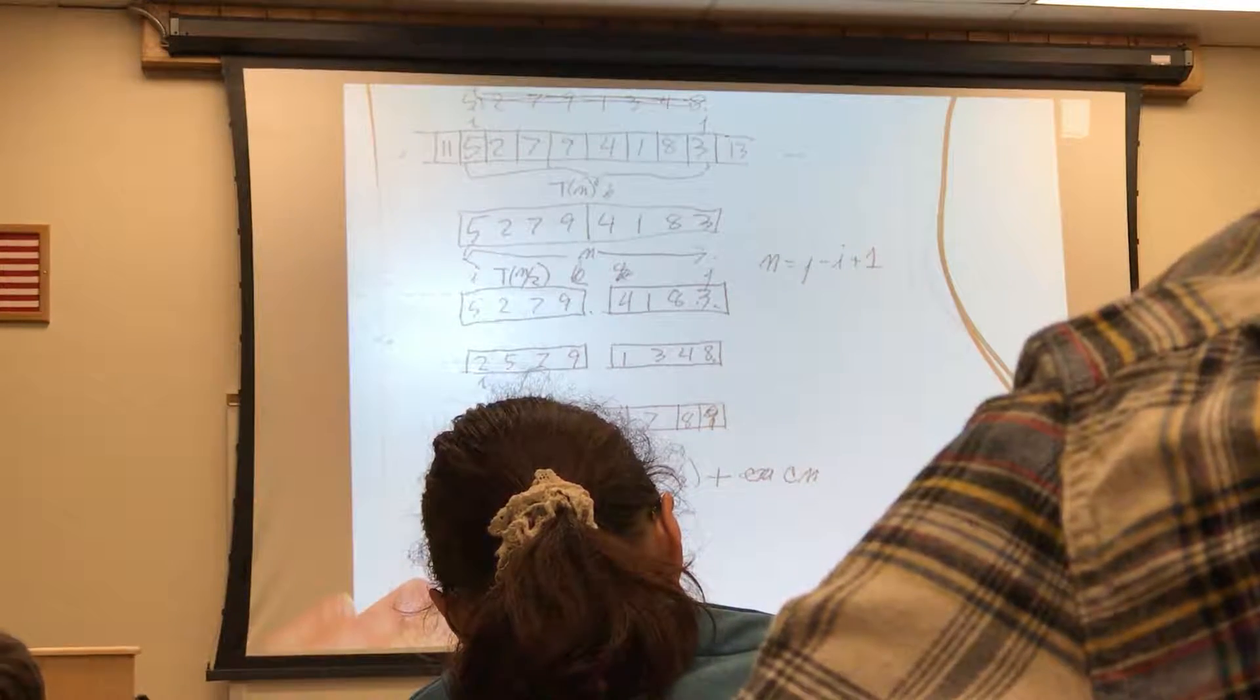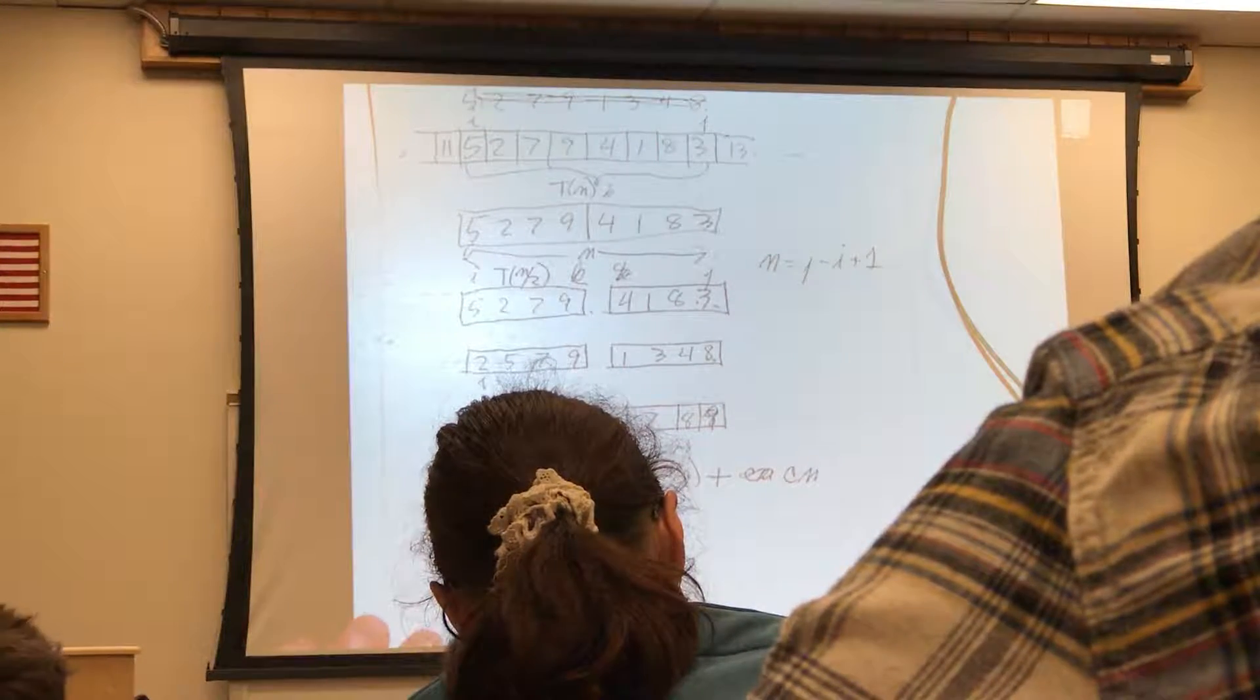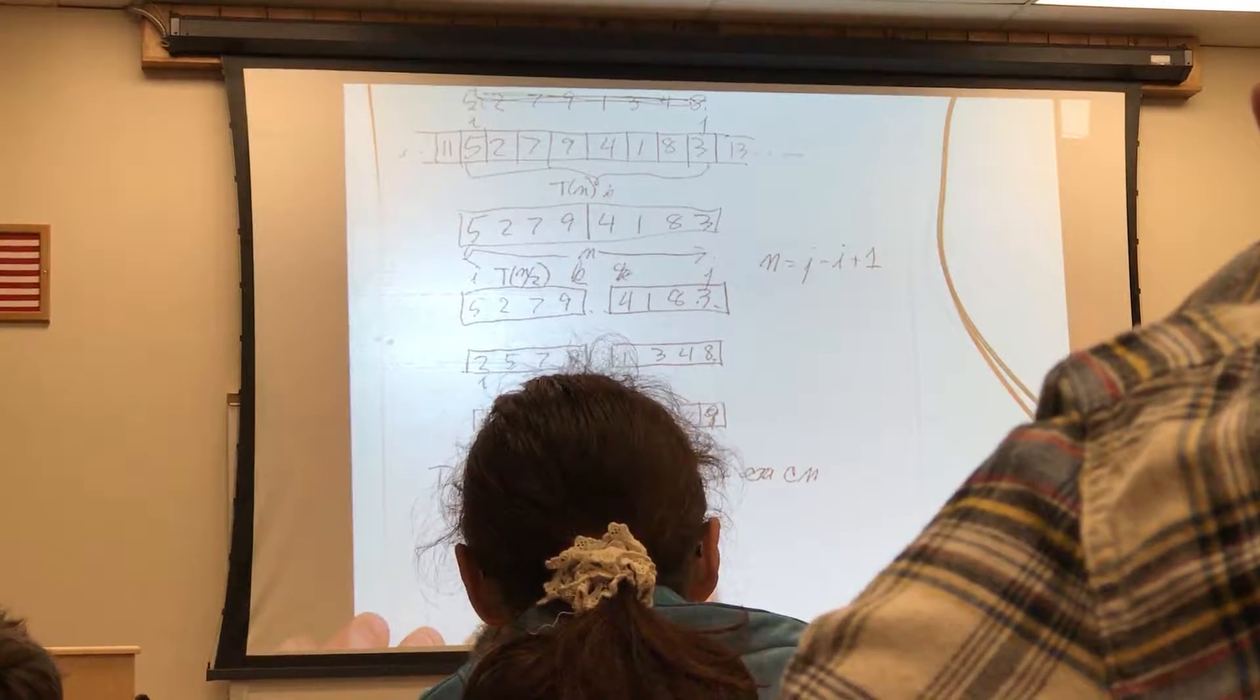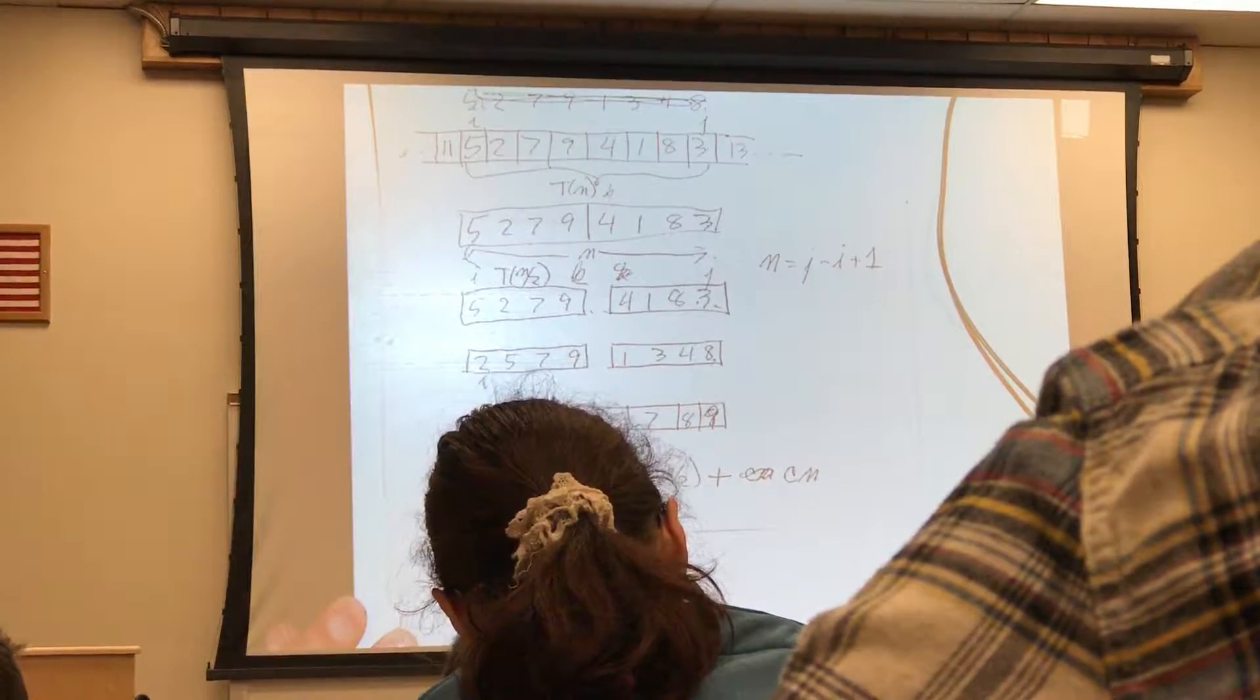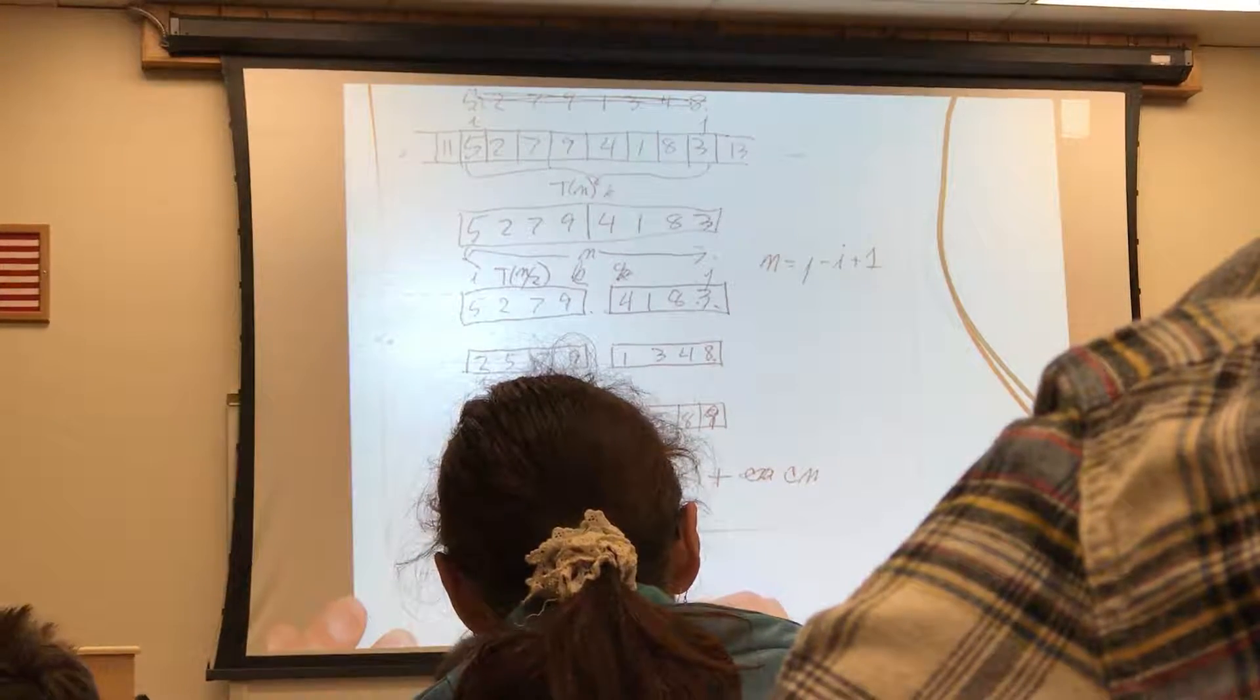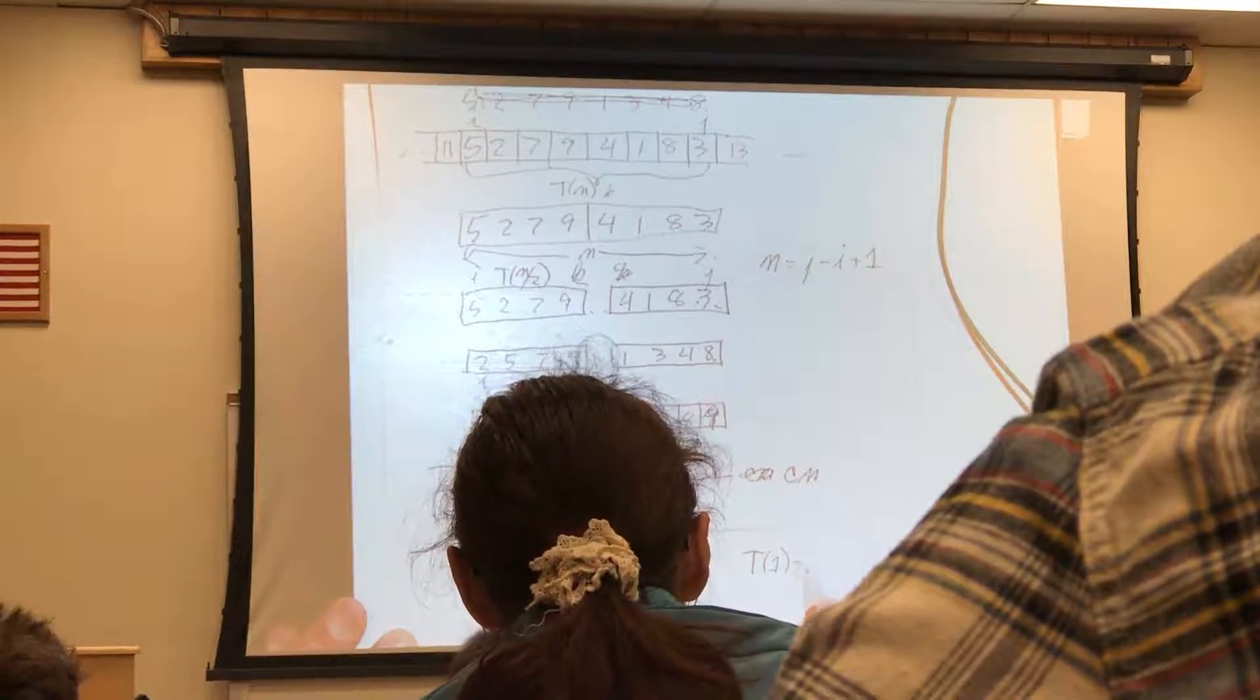Constant times n. We have a base case, which is when we get down to one element, that takes something like constant. So this gives us a function T(n) is equal to 2T(n/2) plus cn. And for a base case, T(1) is equal to 1.